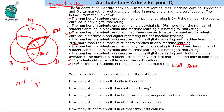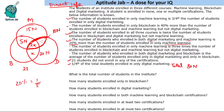The number of students enrolled in only Machine Learning is three times the number enrolled in Blockchain and Machine Learning but not Digital Marketing. Only Machine Learning is 15n, so Blockchain and Machine Learning but not Digital Marketing is 5n.